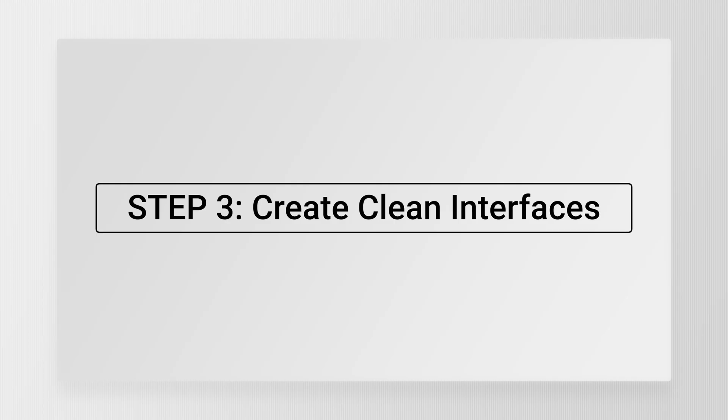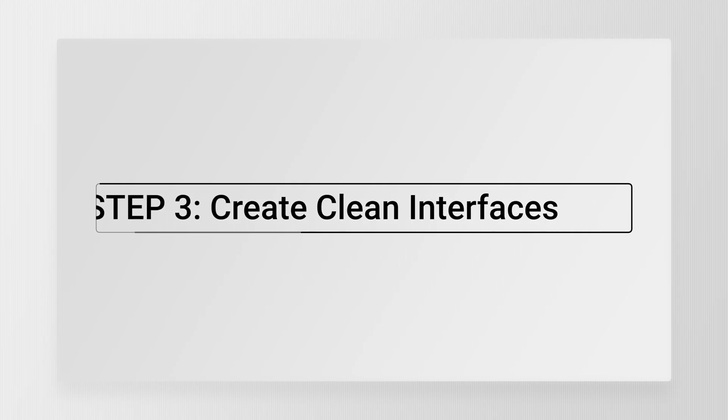And that sets us up perfectly for step three. Because modularization by itself is powerful, but if your modules are still tangled up together, you haven't solved the whole problem. Step three is about loosening those connections — creating clean interfaces so your modules can talk to each other without creating a web of dependencies. So we've cleaned up naming and structure, we've broken down the application into smaller modules, and already your projects start to feel lighter. But if we stop here, we're not quite finished. Even if you have nice tidy modules, but those modules are tangled up with each other, you're still going to have a mess.